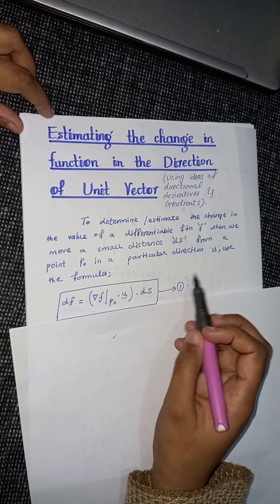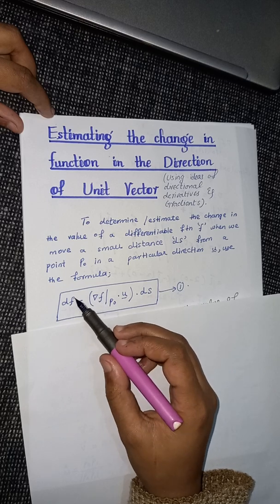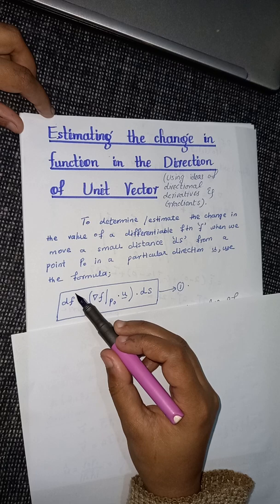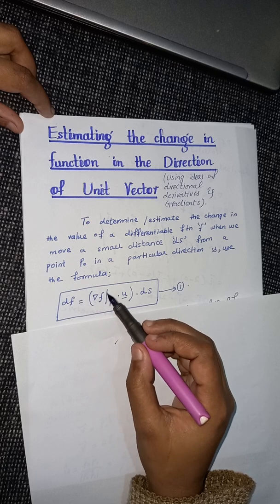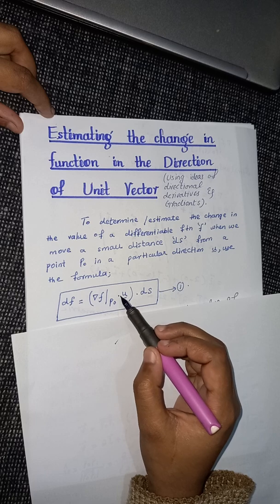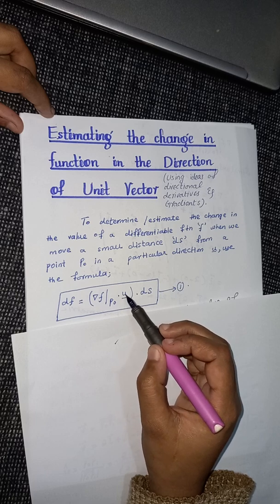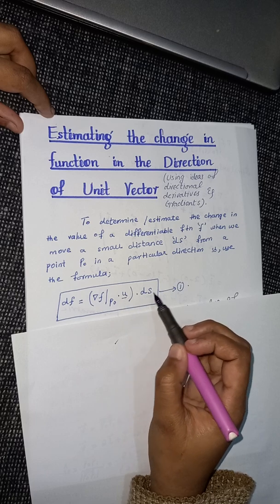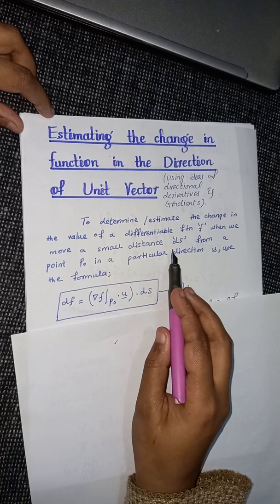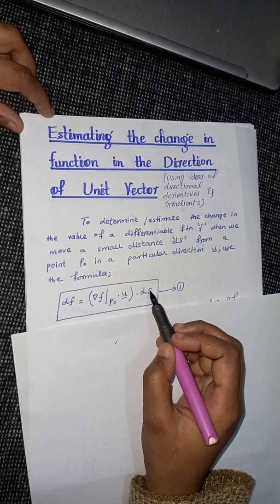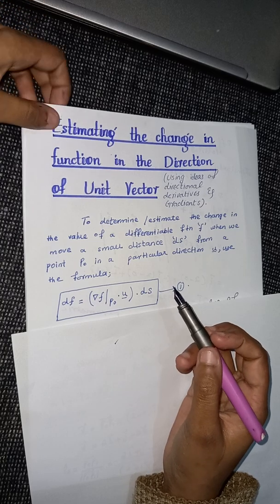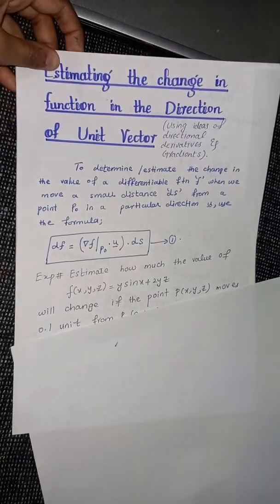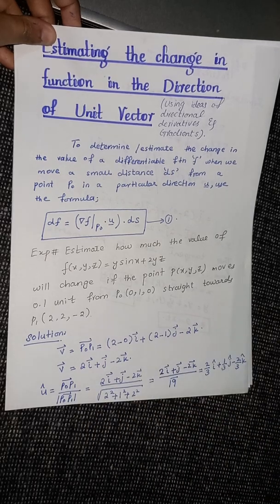The formula is given by: df equals the gradient of our function at the point p₀, dot product with the unit vector û, times ds — where ds is the small distance. This is the formula we can use to estimate the change in our function. Now let us look at a particular example.